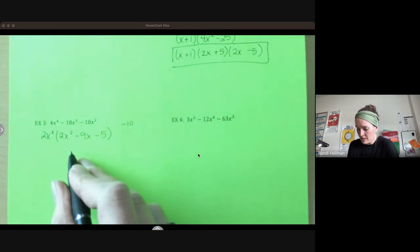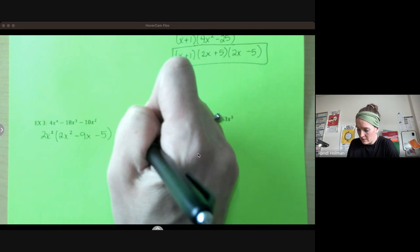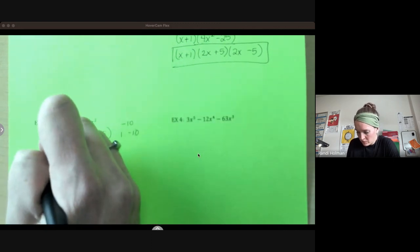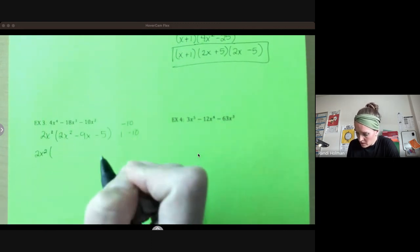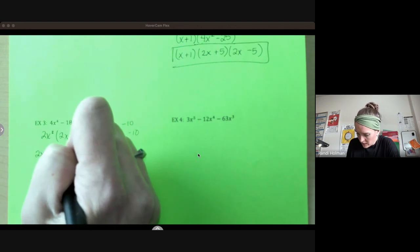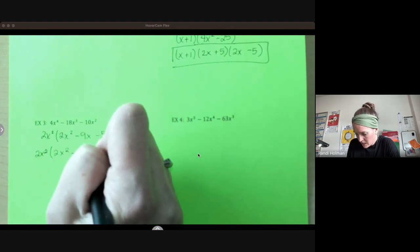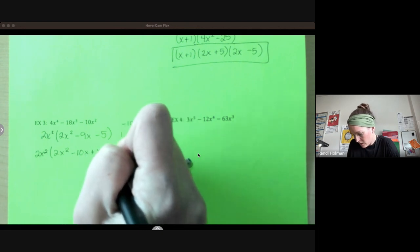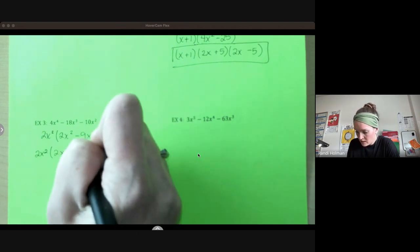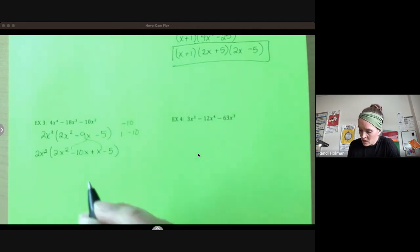So now I'm going to keep that 2x² that I factored out and rewrite 2x², this negative nine, as minus 10x plus x. You could do it the other way too. That's totally fine. As long as that's still equal.